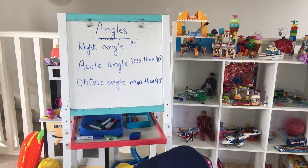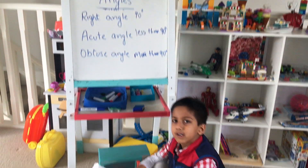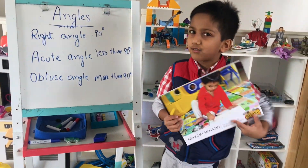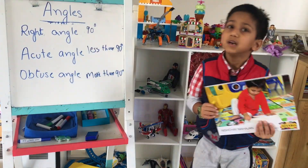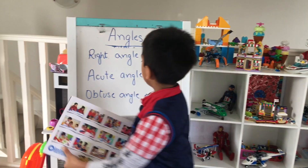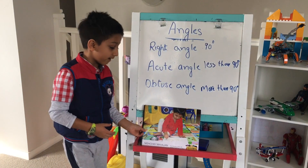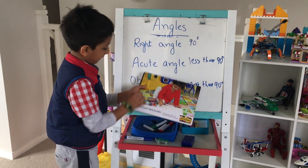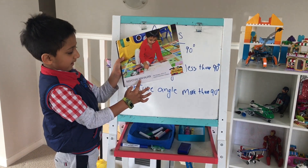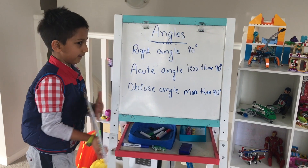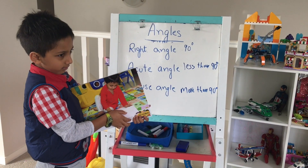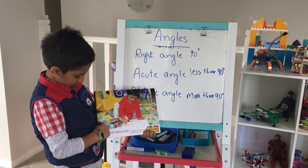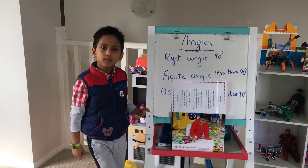In my school we were told to find things in our house which are 90 degrees. Like this one is 90 degrees — it's the right angle.